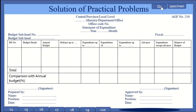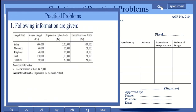We will do one practical question that will clarify the entry of given transactions into the statement of expenditure. The following information is given. Budget heads are: salary, allowance, telephone, rent, and furniture. Annual budgets are: rupees 6 lakh for salary, 60,000 for allowance, 40,000 for telephone, 1 lakh 20,000 for rent, and 50,000 for furniture.